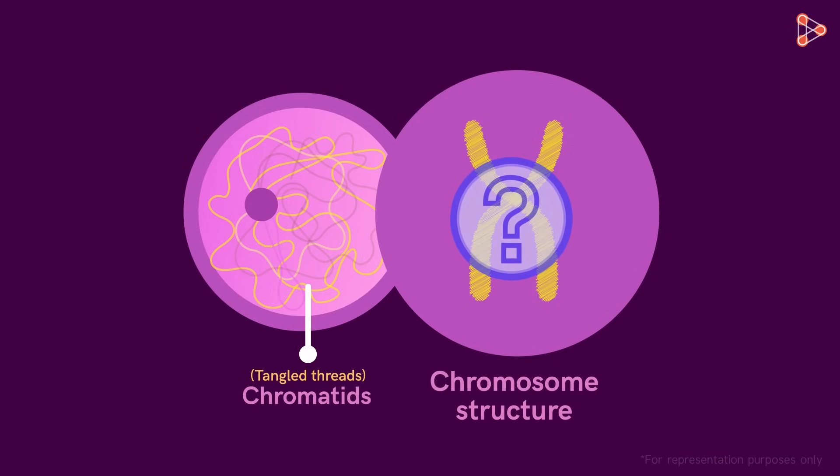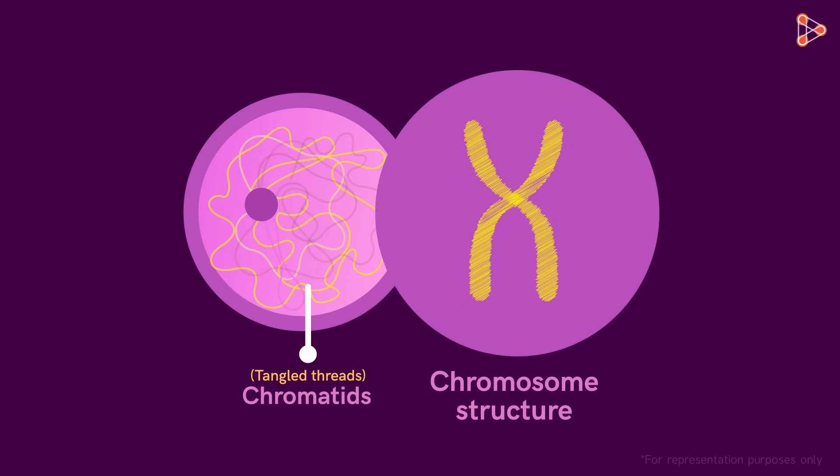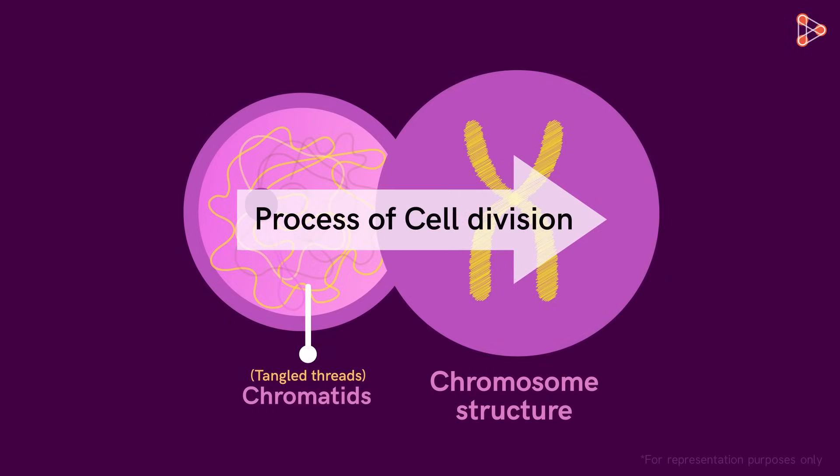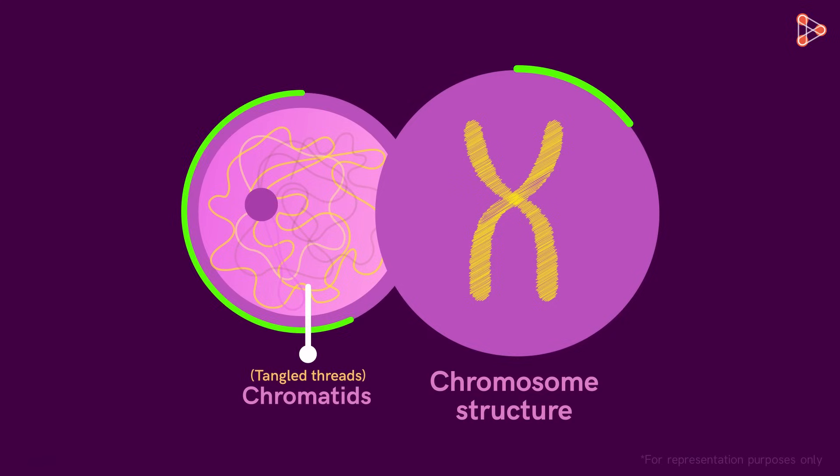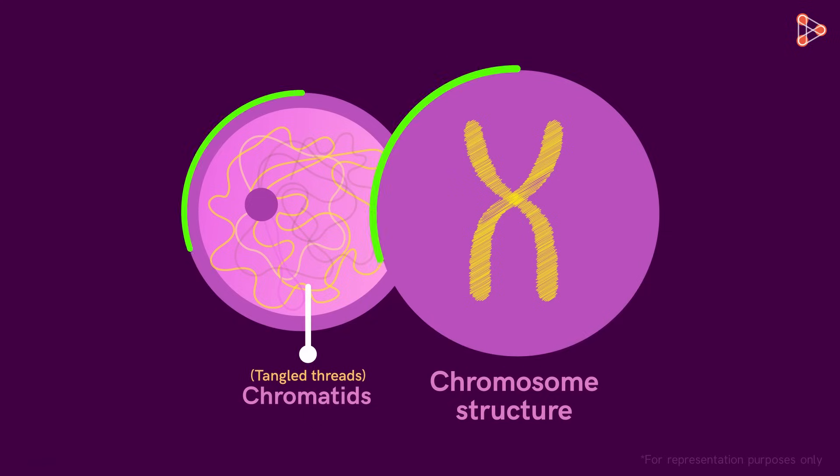What are chromosomes? We will get into their details in the upcoming sessions. For now, we need to get a basic idea about them. So we have this cell with threads sorted in this classical chromosome structure. This structure is seen only when the cell is in the process of division. So can we say that both chromatids and chromosomes are the same? Yes they are! The different names are for the different structures.